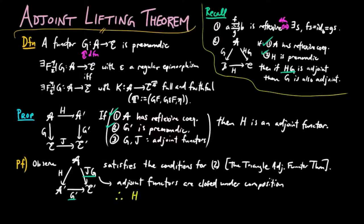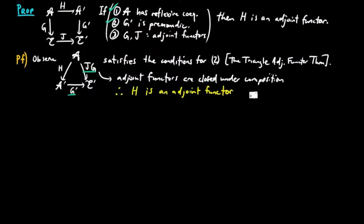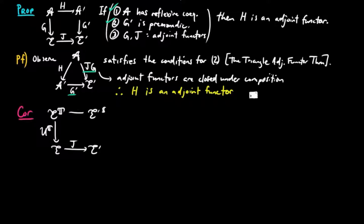Therefore, H is an adjoint functor, which completes this proof. As a corollary, suppose we have a commutative square of functors where the left and right arrows are the forgetful functors for the Eilenberg-Moore categories for the monads T and S, respectively.